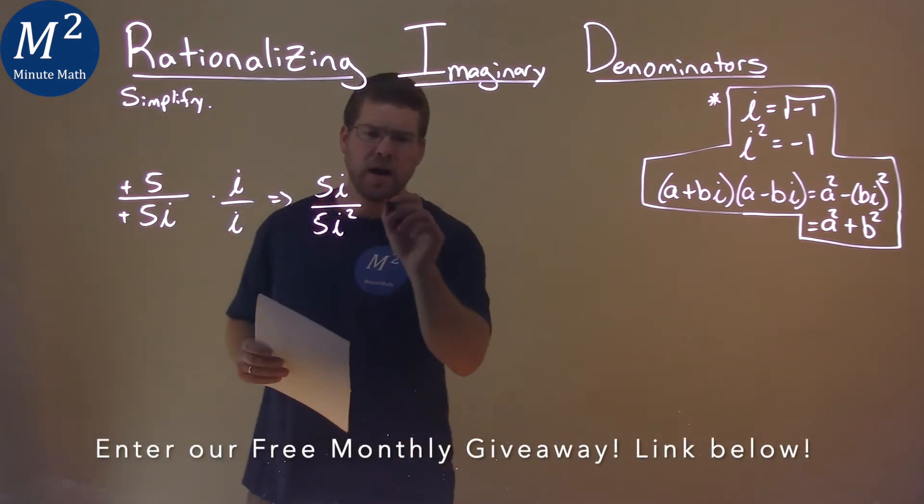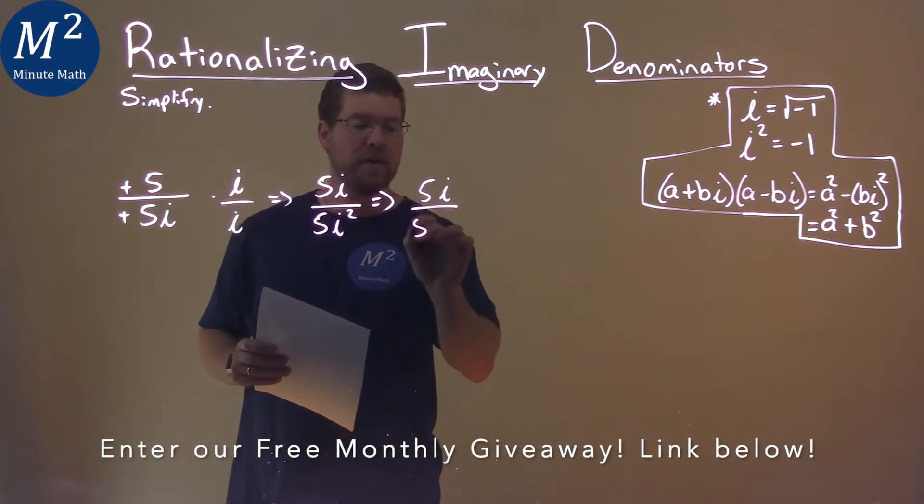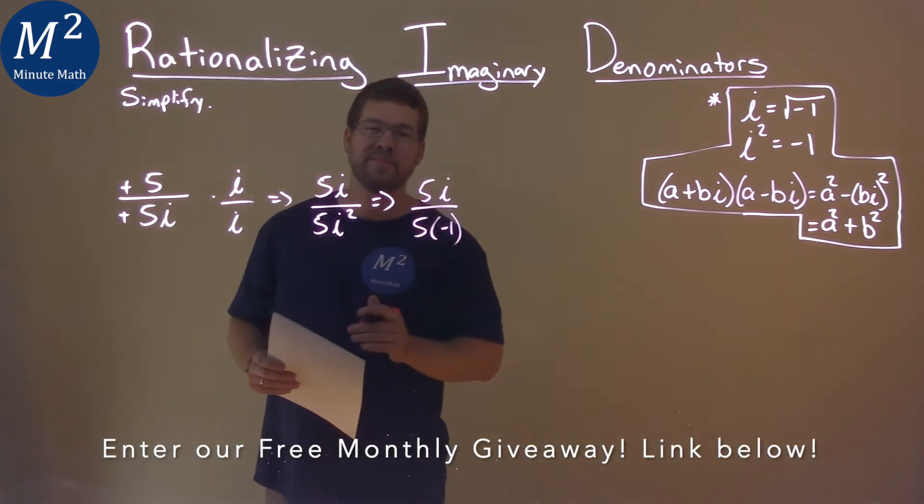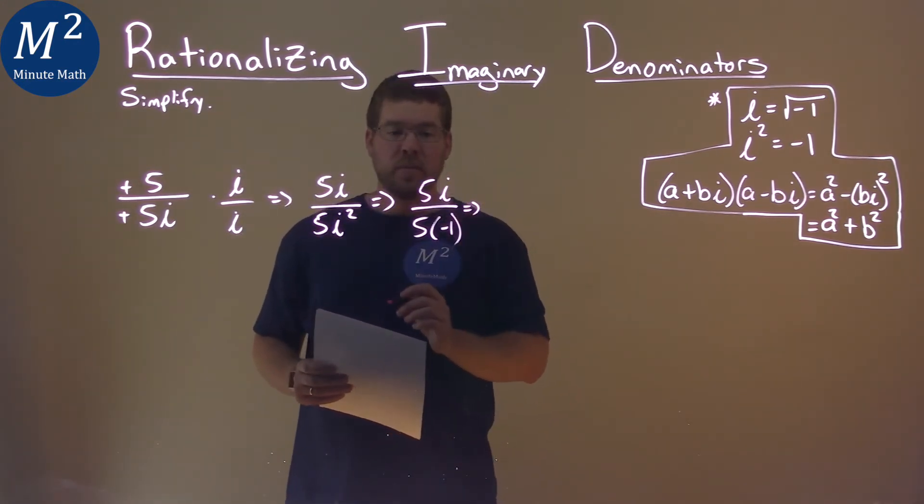Well, what's i squared? i squared is negative 1. So we have 5i here over 5 times negative 1. Now we don't have an i value in our denominator. Let's simplify this a little more.